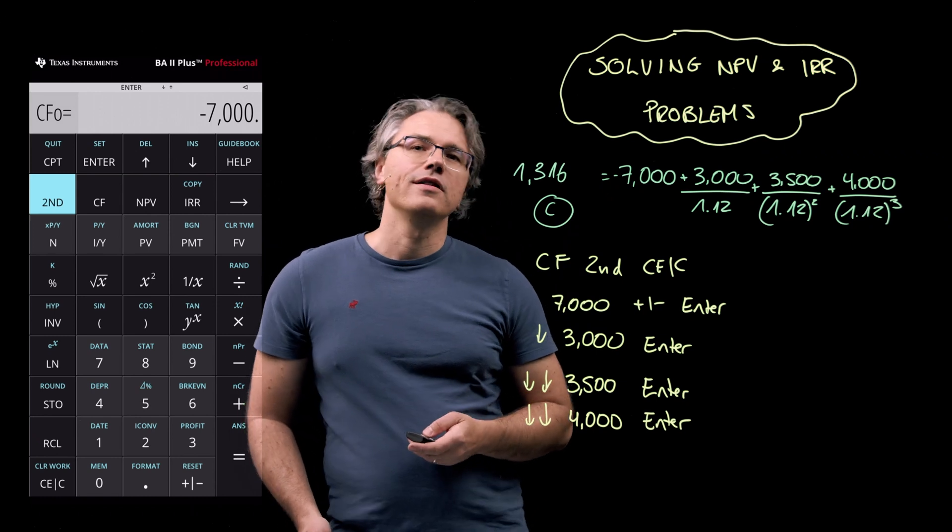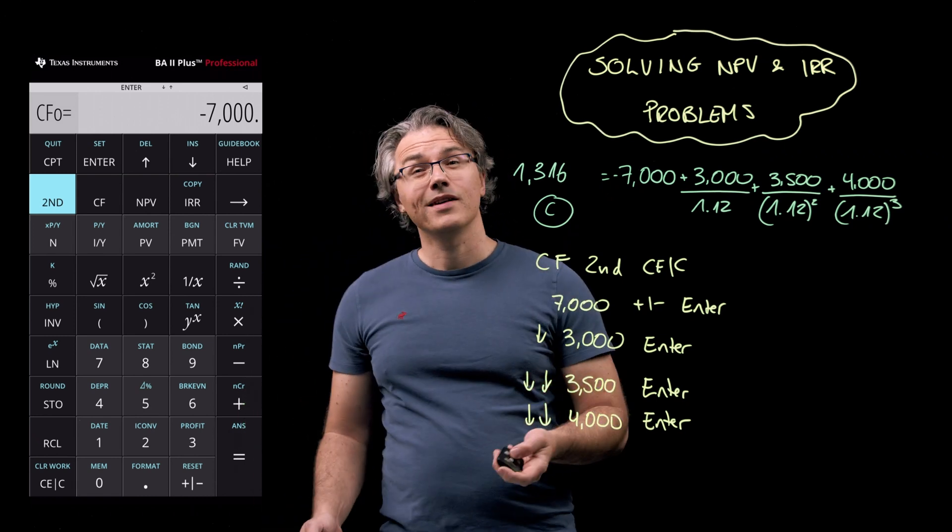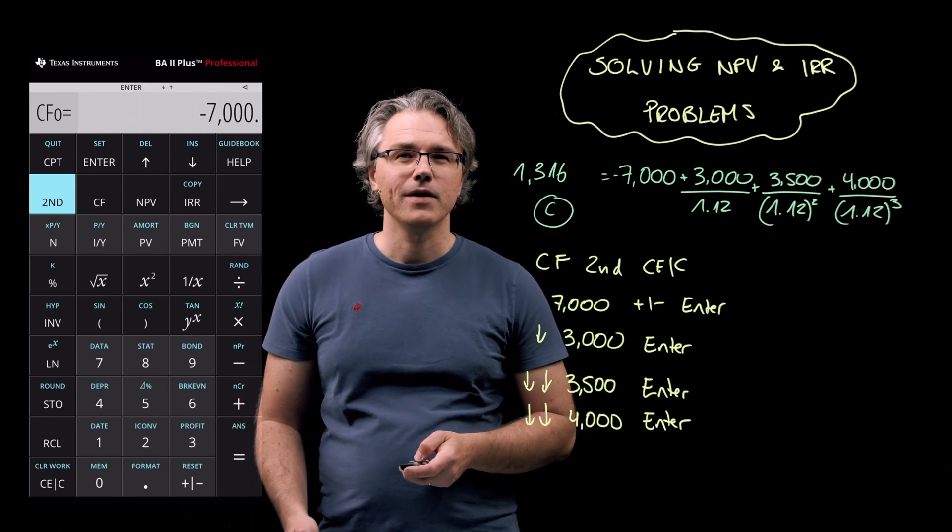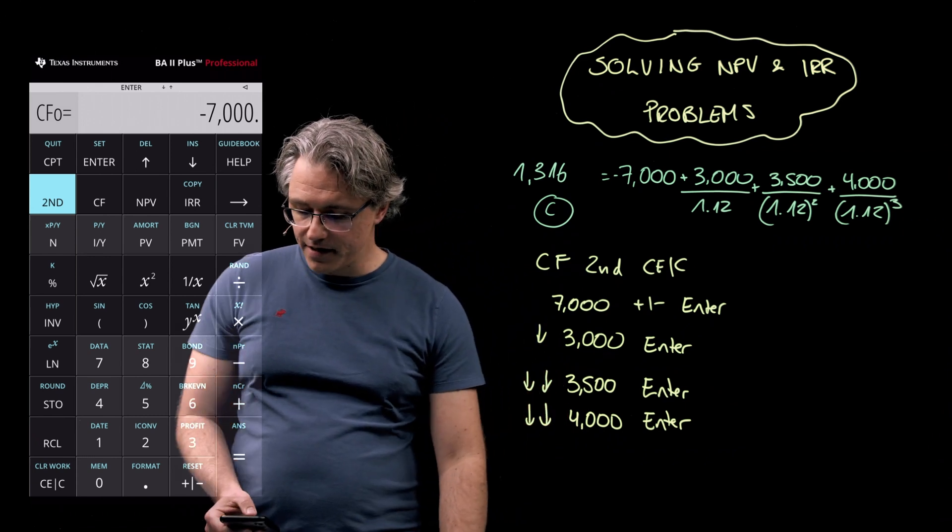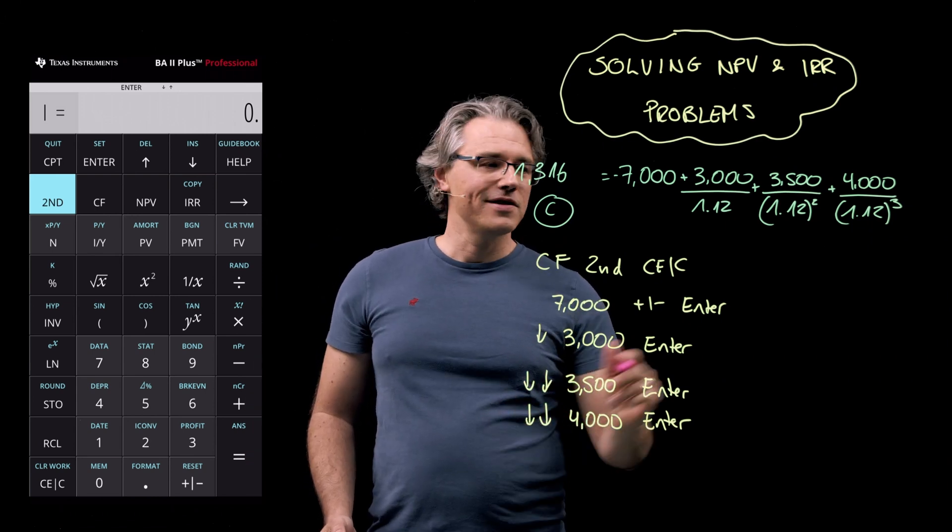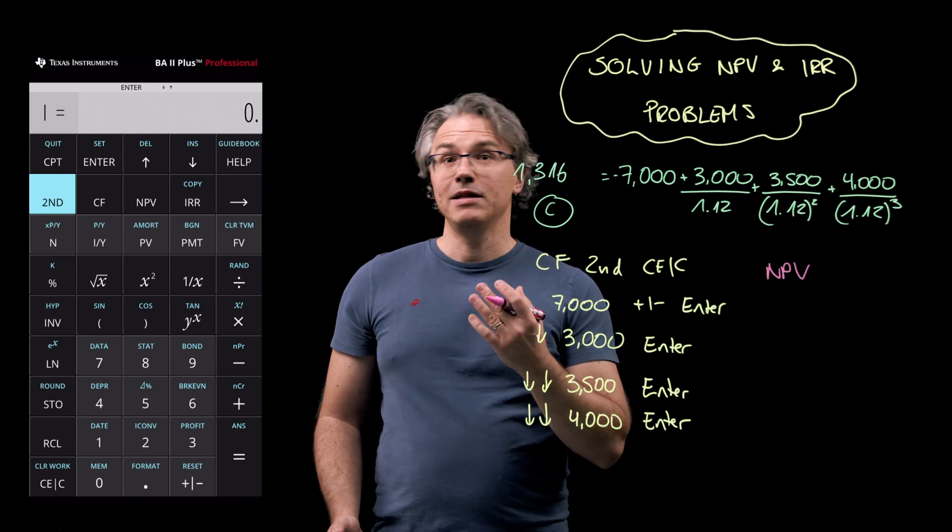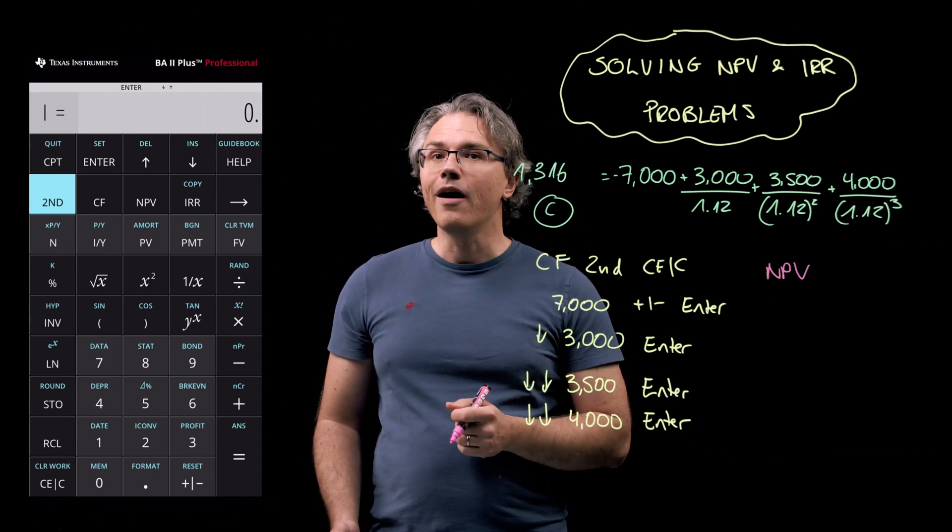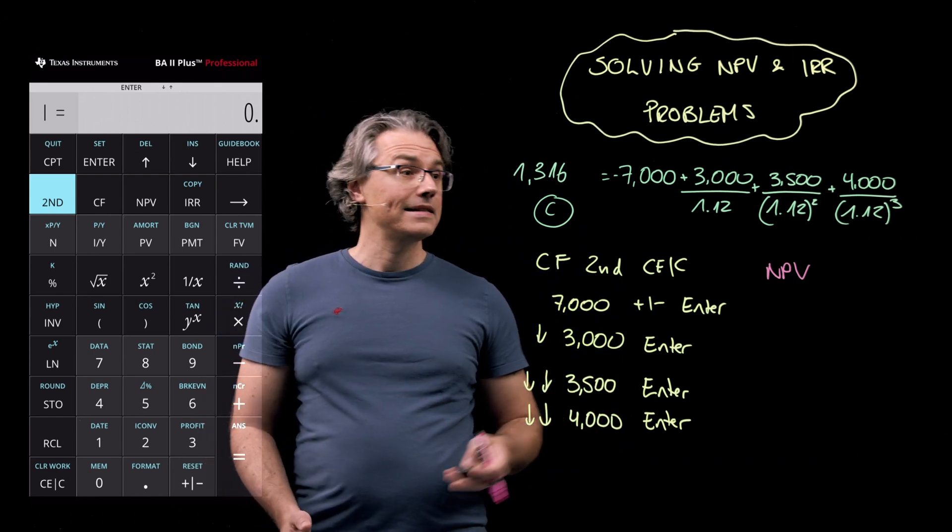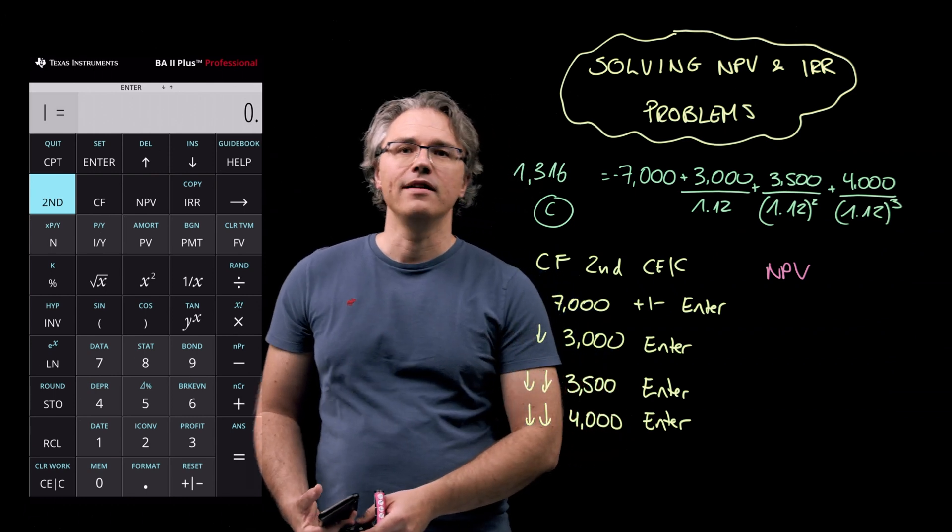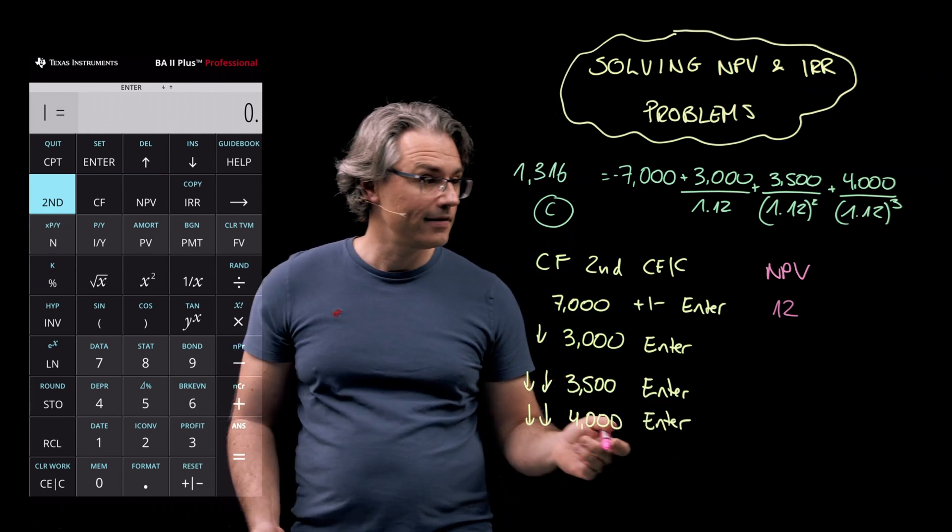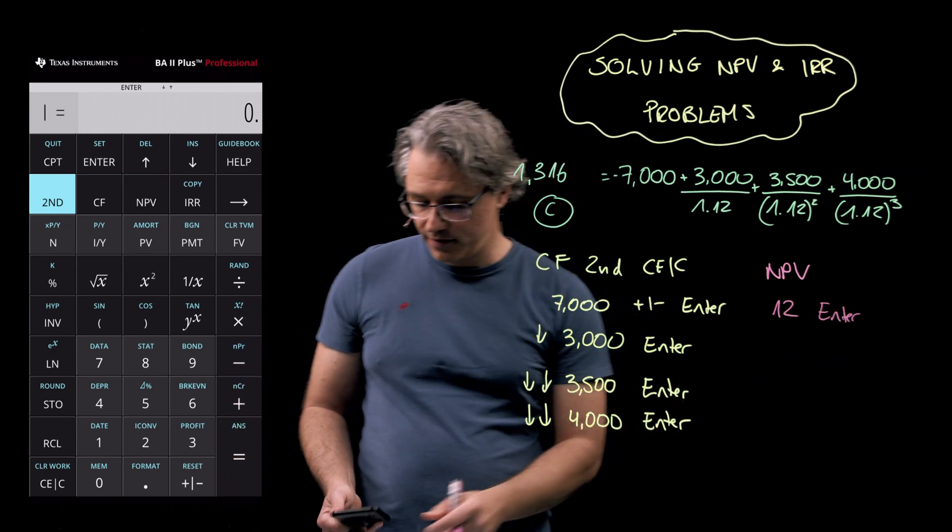Now the cash flow worksheet does not perform any computations as such. It's a place that is meant strictly for storing cash flow data. Let's now press the NPV key, which is right next door to CF. If you do this, you should see that your calculator is immediately asking for I. That's the rate we're going to use for discounting. The rate is 12%. So type in 12, followed by the enter key.